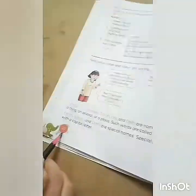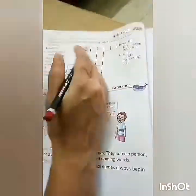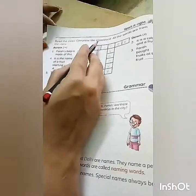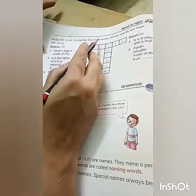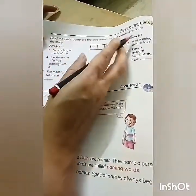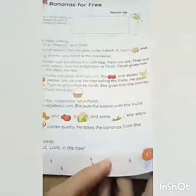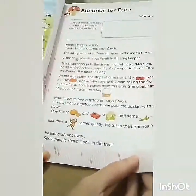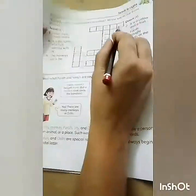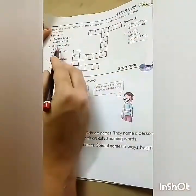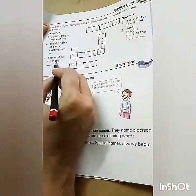Page number 20. Now read the clues and complete the crossword. All the words are from the story. So what is the story here? Bananas for Free. If you read this story once or twice, you can easily write these words with the help of these clues.